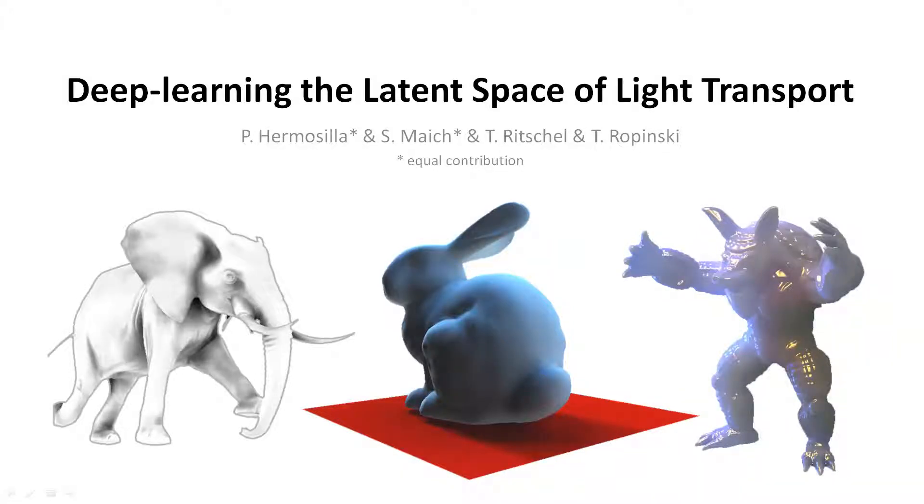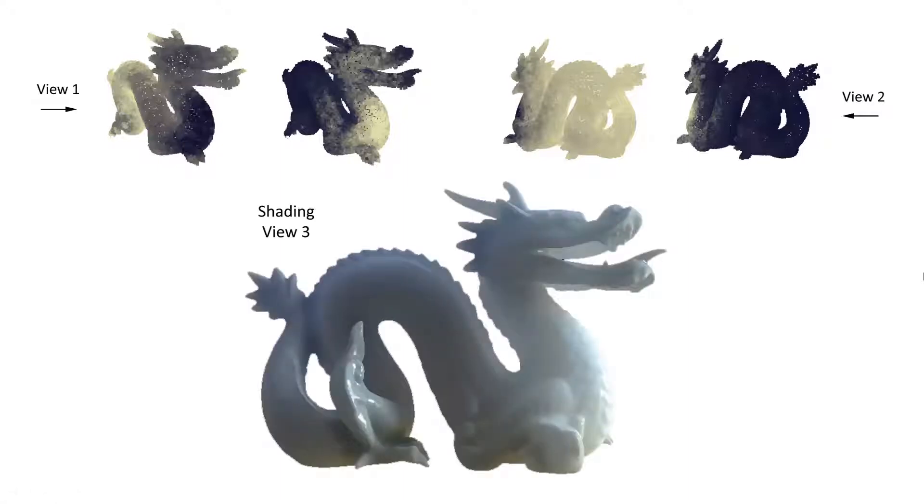We present Deep Learning, the Latent Space of Light Transport. In this work, we train a neural network which is able to detect a set of abstract features in a 3D point cloud. These features are then used to generate different lighting effects during rendering.